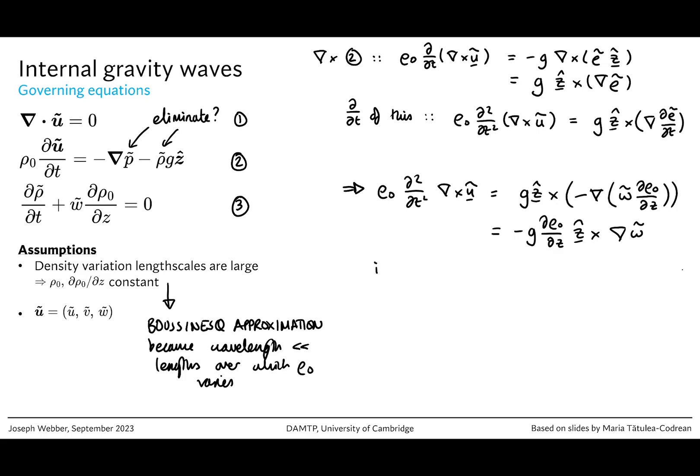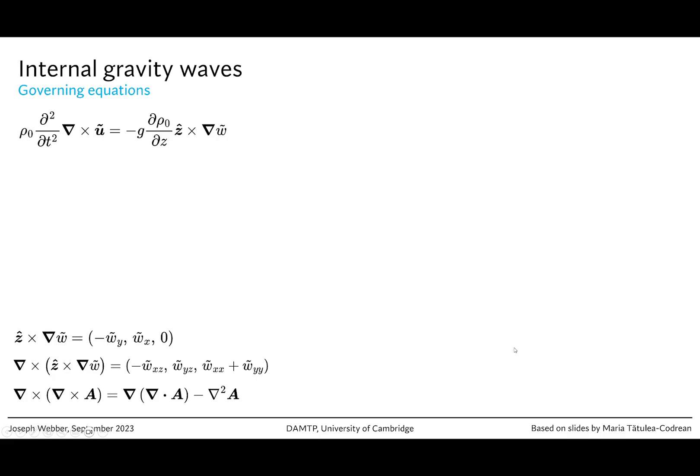So this is our equation, and this is an equation in u tilde. Remember, w tilde is just one of the components of u tilde. So we can now take the curl again. We'll take the curl of this equation, and that gives us rho0 d2 by dt squared curl of curl of u tilde is equal to minus g d rho0 by dz curl of z crossed with grad w tilde.